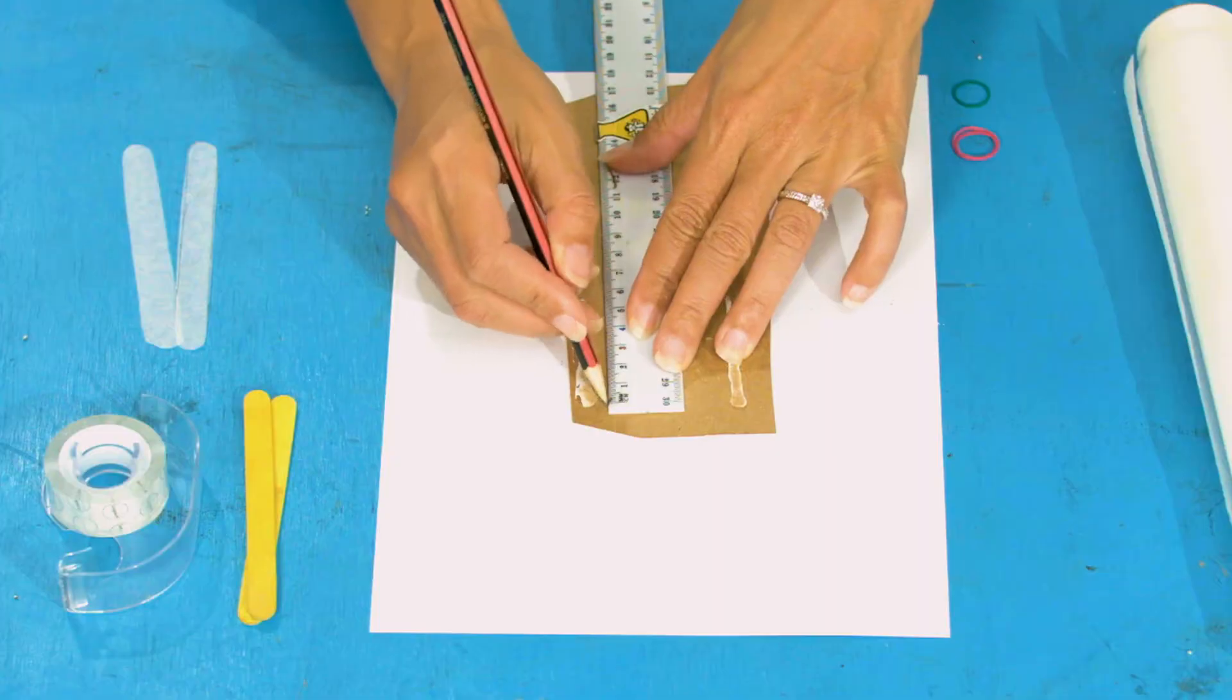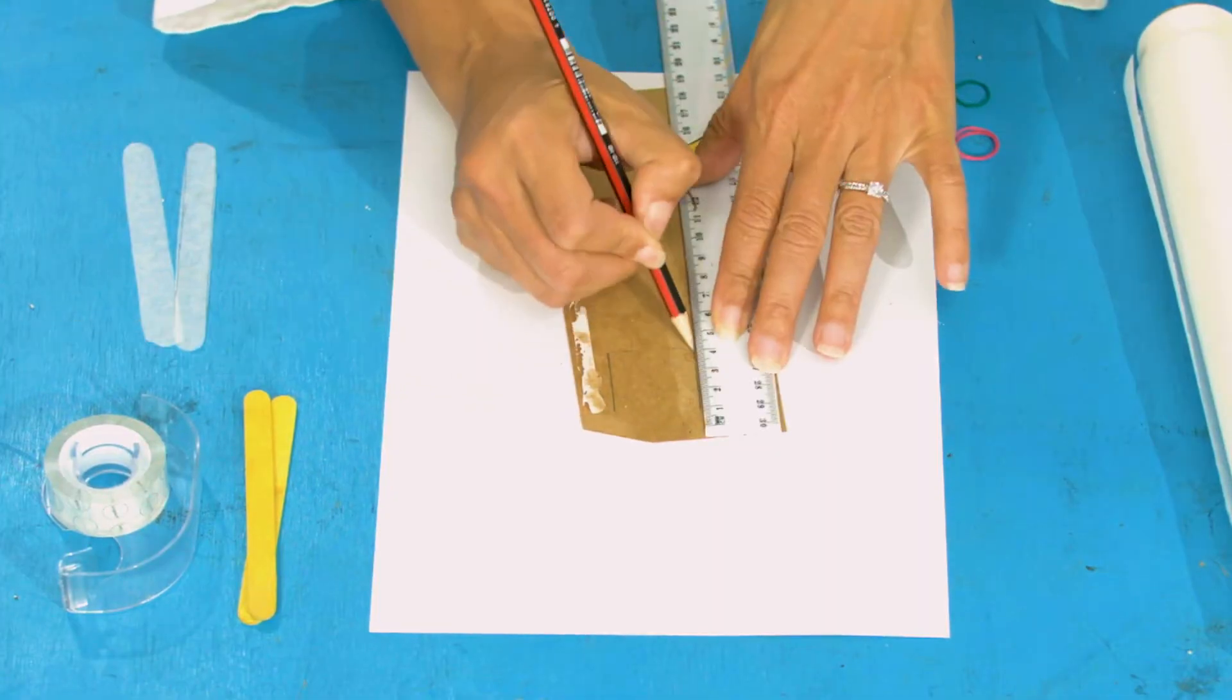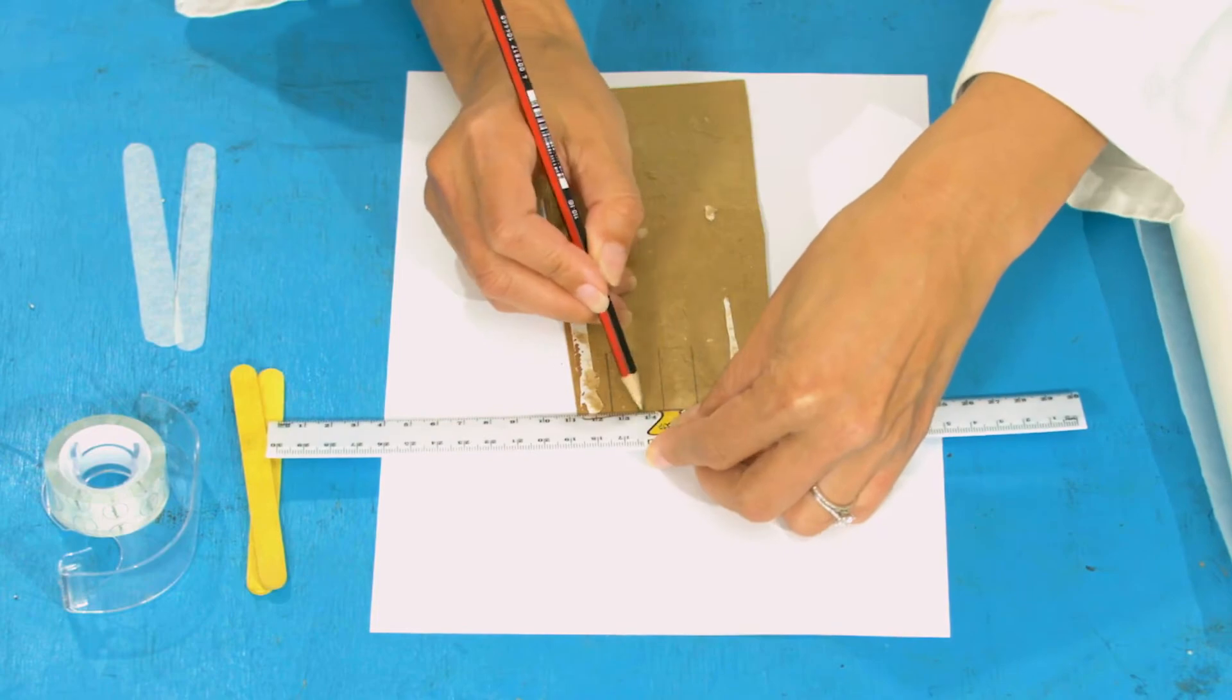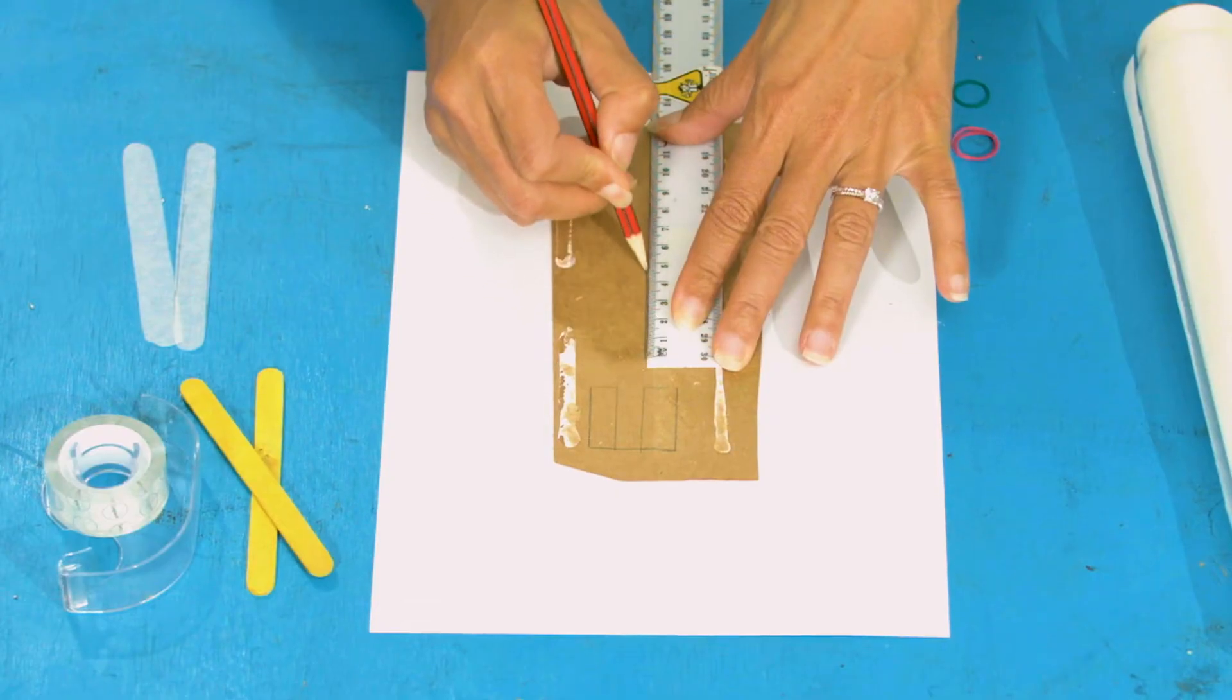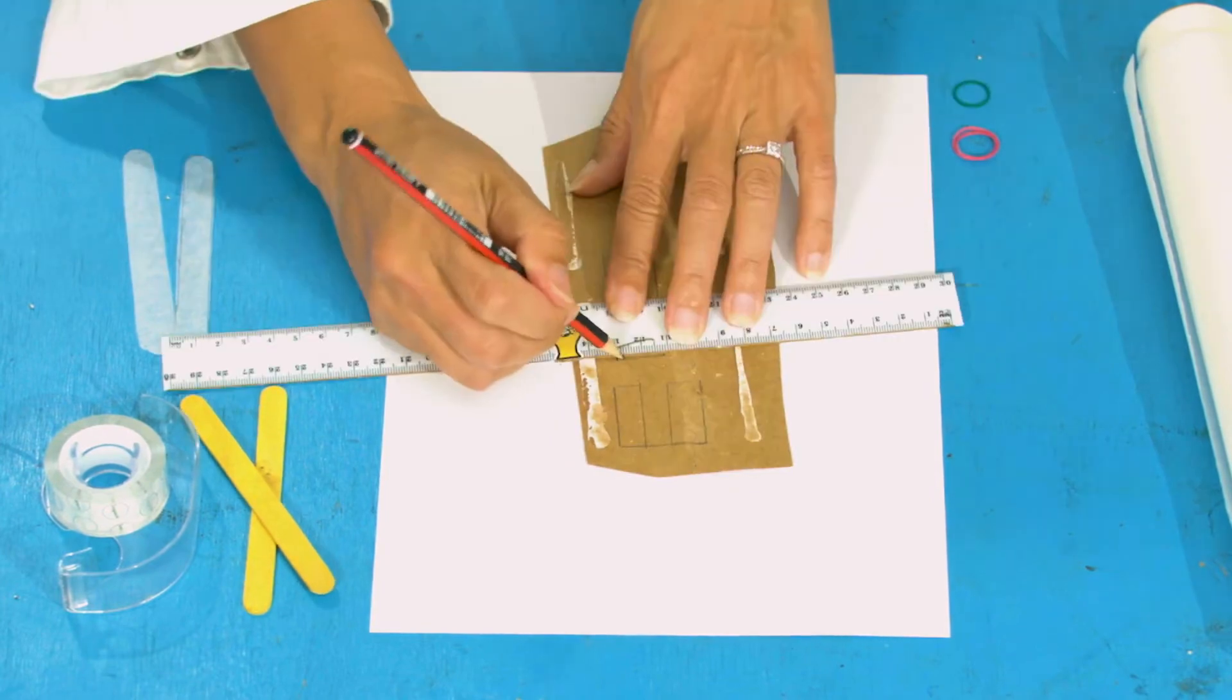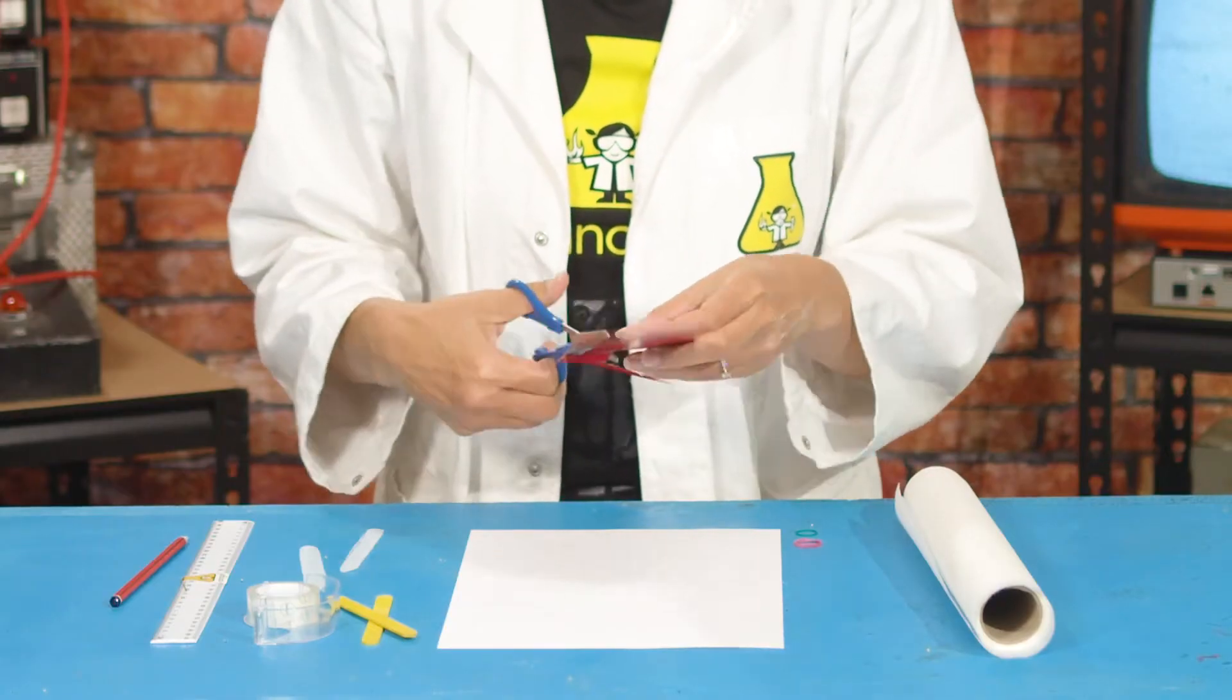Next you're gonna take a thin sheet of card and cut out two small rectangles about three centimeters long and one centimeter wide. Okay, I've drawn that one. Now I want another rectangle that's five centimeters long and two centimeters wide. So once you've marked them out, you're gonna cut them out with some scissors.